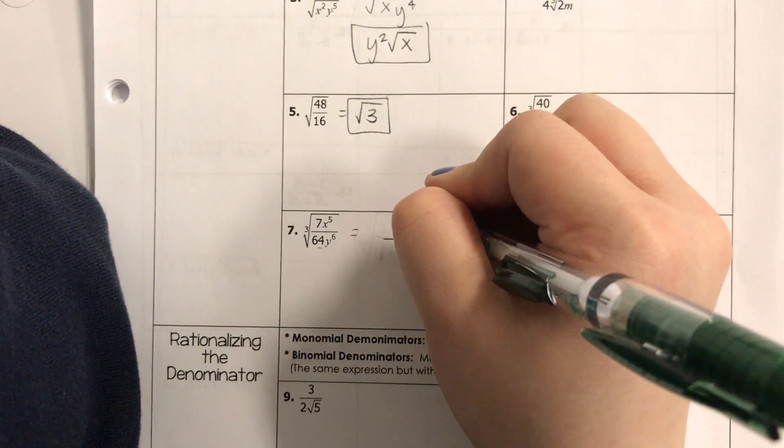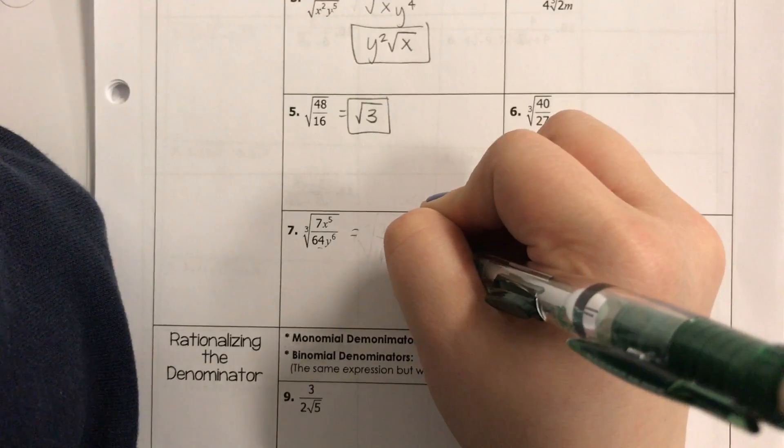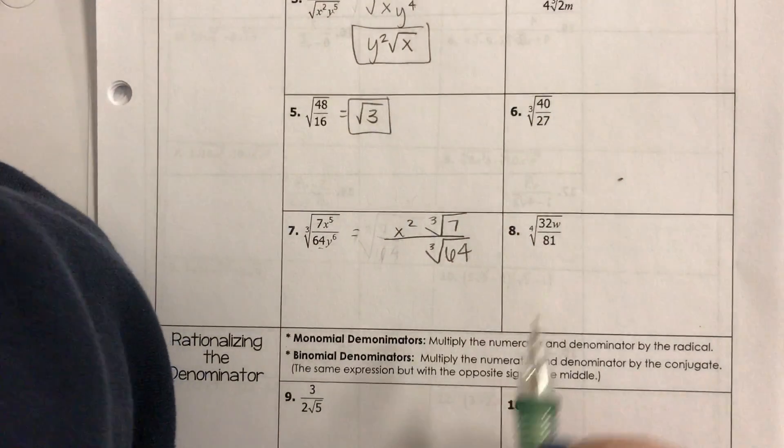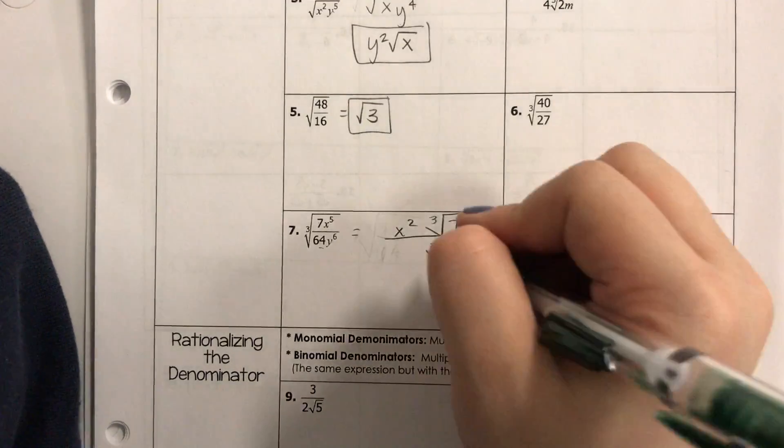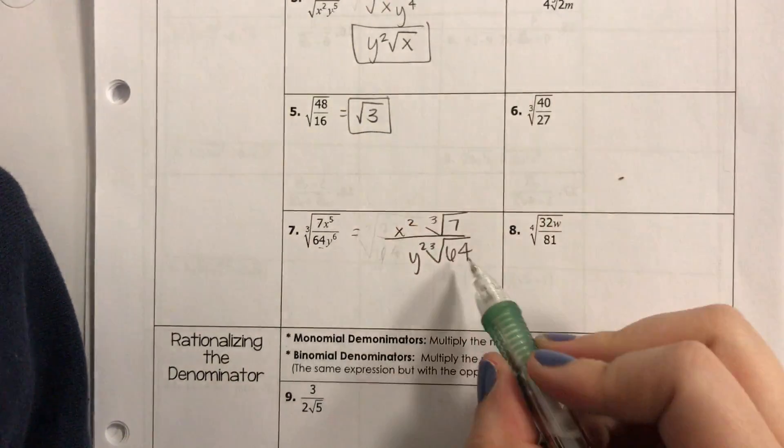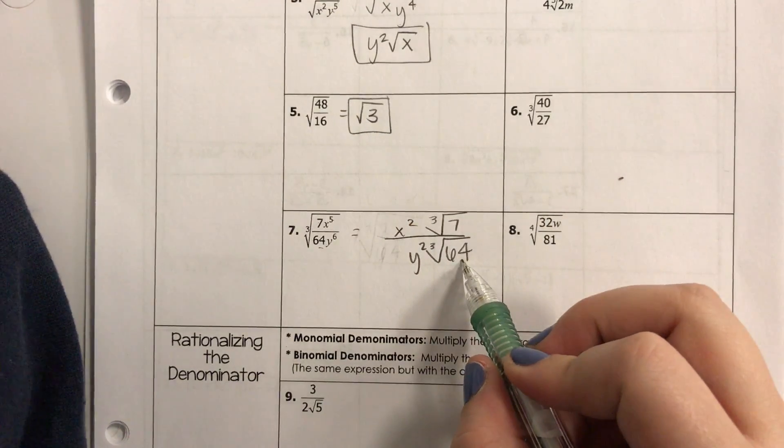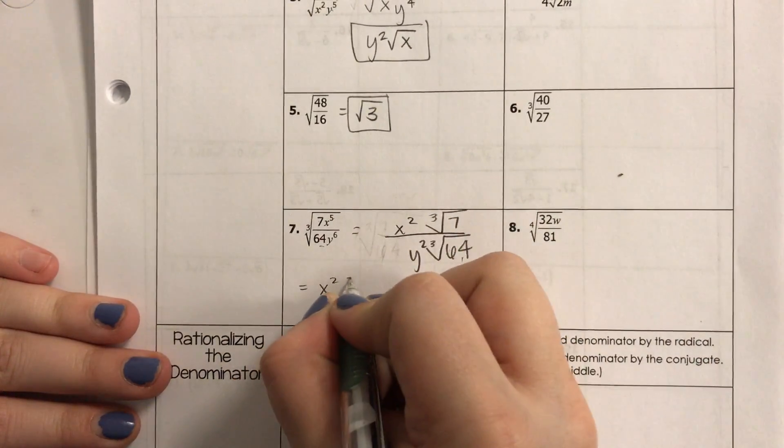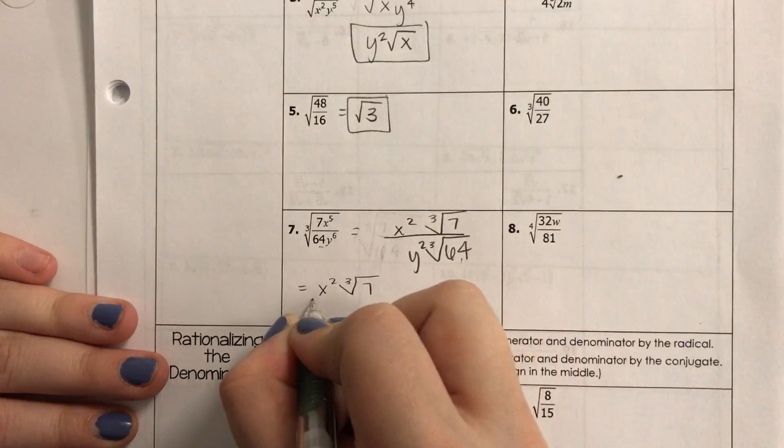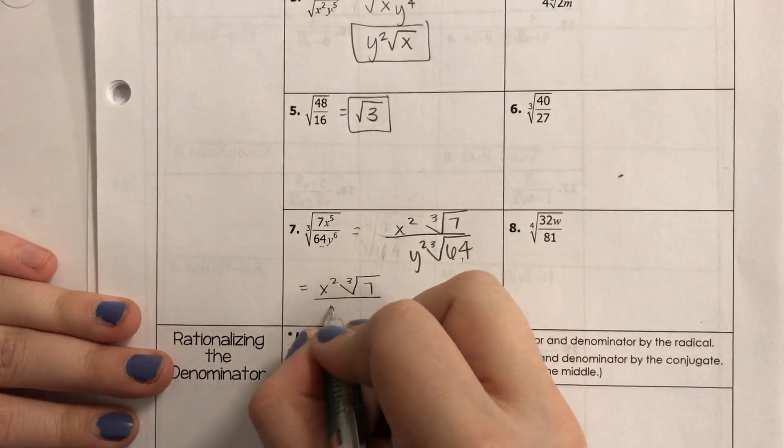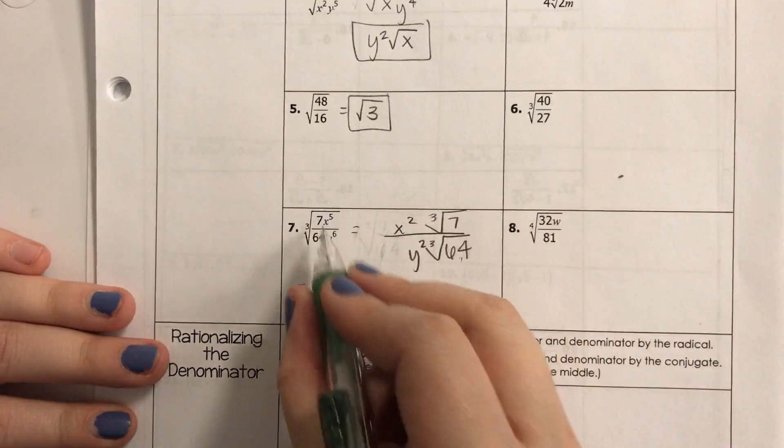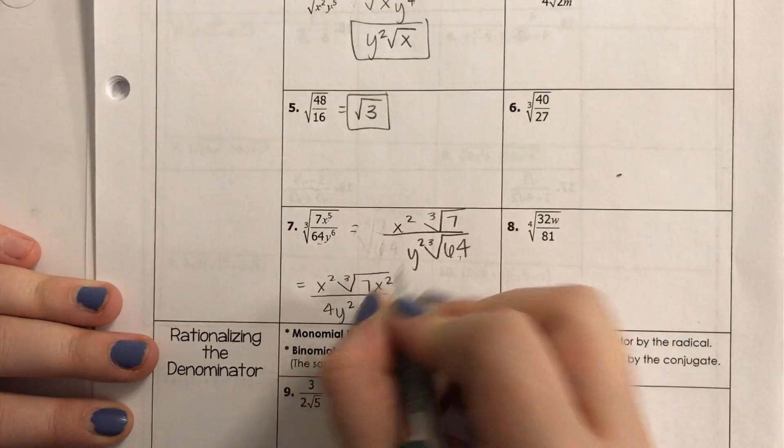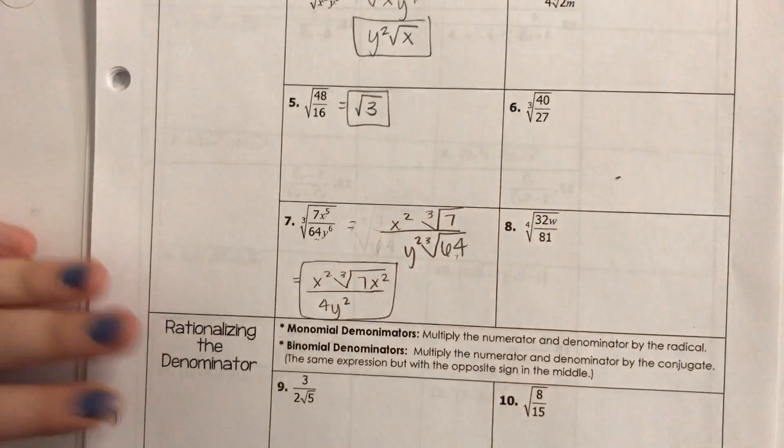With 7, cubed root of 7 and the cubed root of 64. Oh, which I can totally take the cubed root of 64. I just realized that. Yeah. And then, 6 divided by 3 is 2. And then, what's the cubed root of 64? It's 4. So, really, our answer is x squared cubed root of 7 divided by 4, y squared. Oh, and there's still x squared left over in the radical. Gosh, I'm just having a day today.